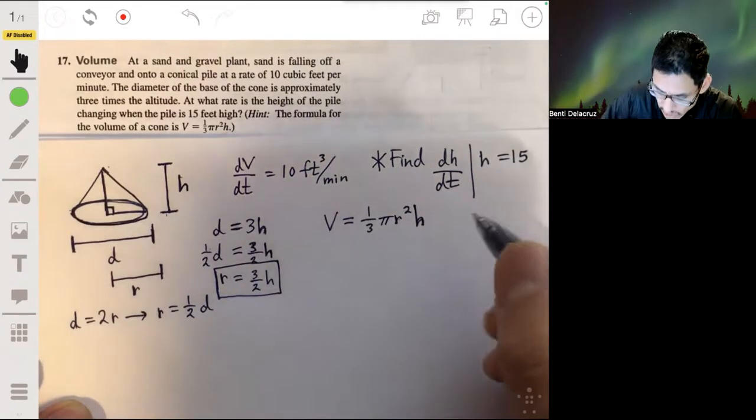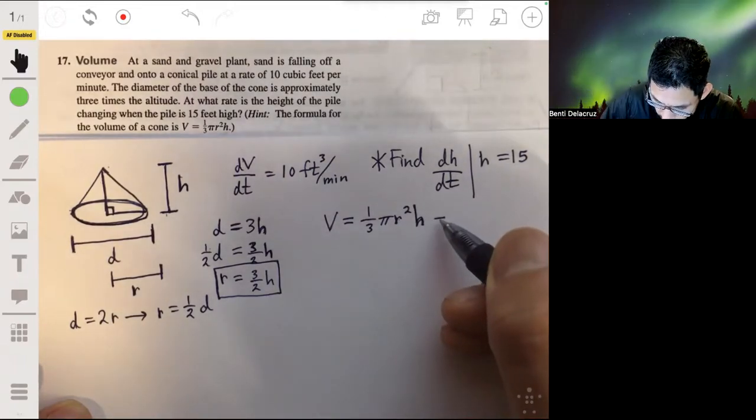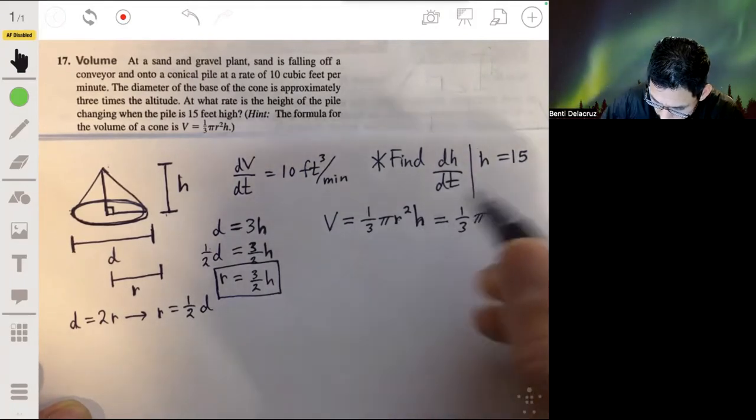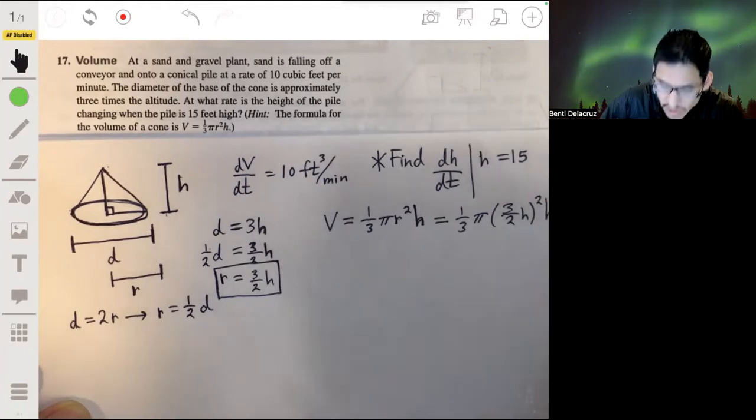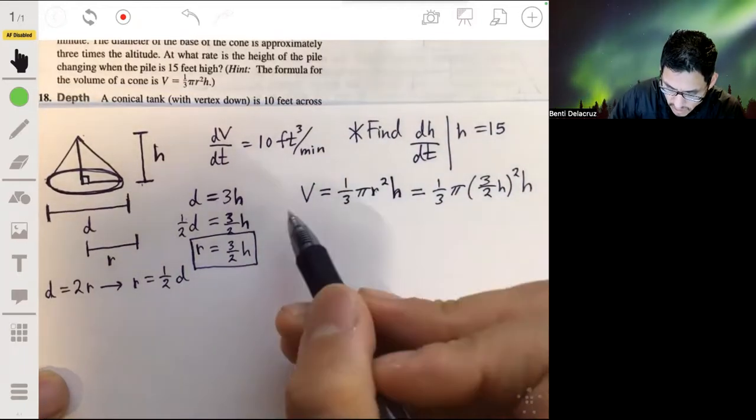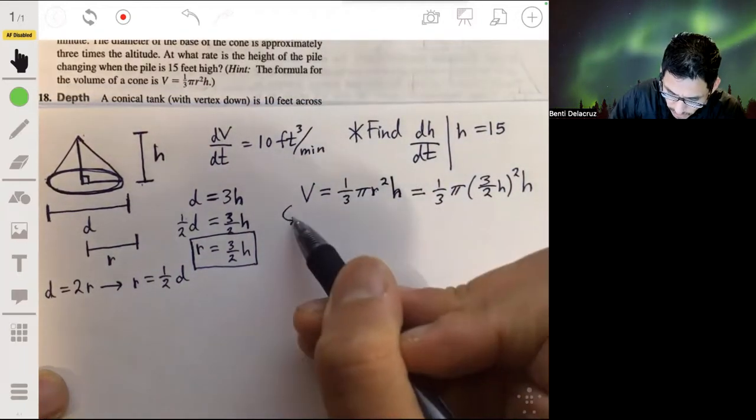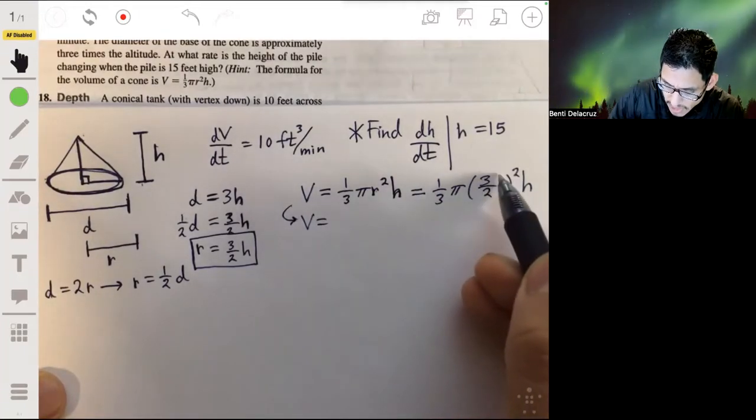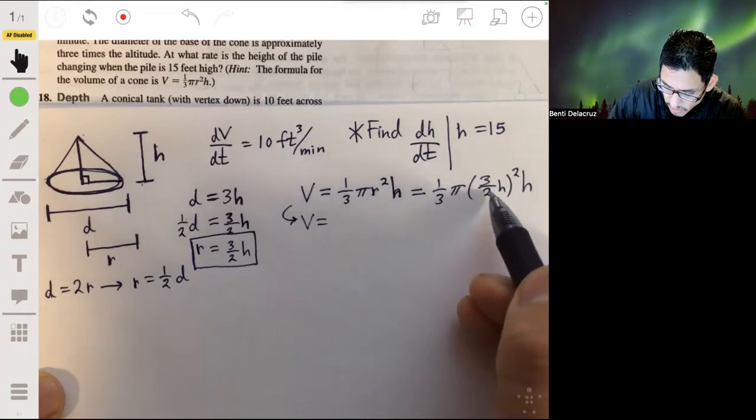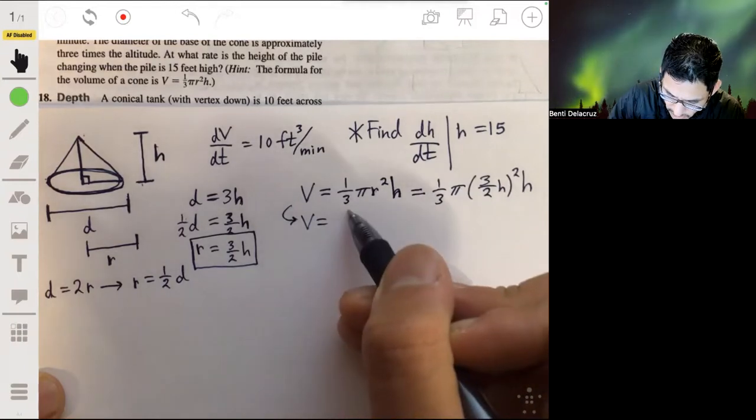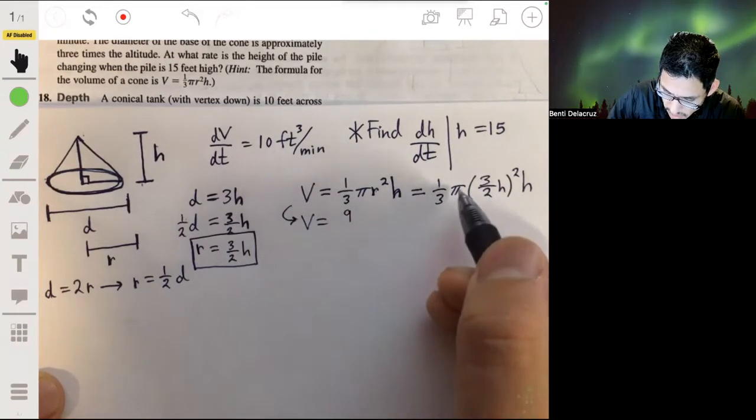So this then becomes one-third pi, and r will be three halves h squared times h. Let's keep going, let's make this a little cleaner. So that will be three squared is nine, over two squared is four, so nine on top.